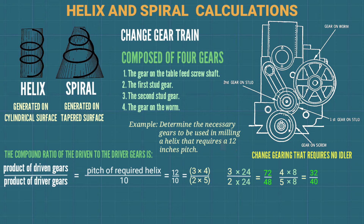The first selected gear pair is 72 and 32: the 72-tooth gear is placed on the worm and the 32-tooth gear is the second stud gear. The second gear pair is 48 and 40: the 48-tooth gear is placed on the table feed shaft and the 40-tooth gear is the first stud gear.